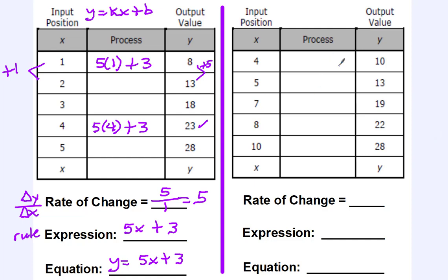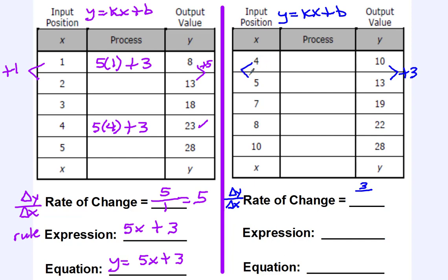Let's try another one. Here's our next table with x values, y values, and a process area. Our equation format: y equals kx plus b. First, find the rate of change — the change in y over the change in x. I'm going from 10 to 13, increasing by 3, so my change in y is 3. The corresponding x values go from 4 to 5, increasing by 1. So my rate of change is 3 over 1, which simplifies to 3. This is my k.